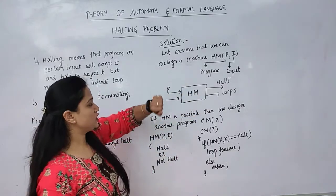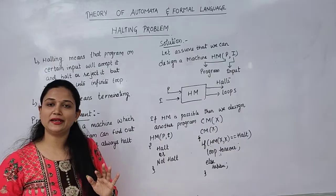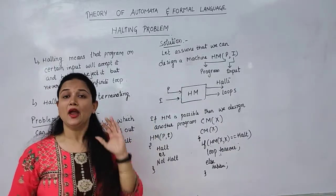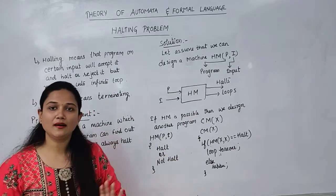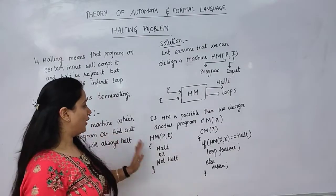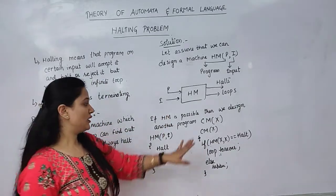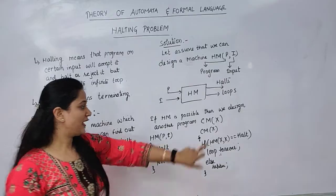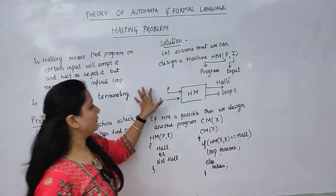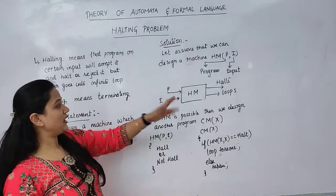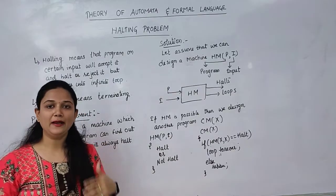Now how will you know that this machine will always give you a correct output for every Turing machine and input? For every Turing machine or every input, how can we confirm that what we have made will also work in this way? This means to check this again, I will have to prepare another Turing machine, write another algorithm. Now if HM is possible, then we have designed another program, another machine. Let's say the another machine is called CM.